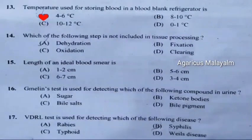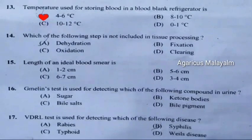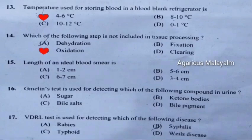Fourteenth question: Which of the following steps is not included in tissue processing? Correct answer is Option C: Oxidation.